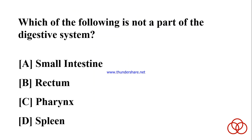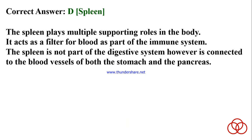Which of the following is not a part of the digestive system? A) Small intestine. B) Rectum. C) Pharynx. D) Spleen. Correct answer: D. Spleen. The spleen plays multiple supporting roles in the body — it acts as a filter for blood as part of the immune system. The spleen is not part of the digestive system; however, it is connected to the blood vessels of both the stomach and the pancreas.